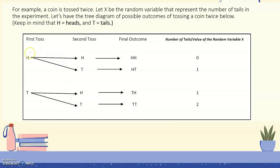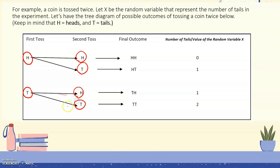For the first toss, we can have two possible outcomes: it can be heads and it can also be tails. Now for the second toss, it can also be heads and it can also be tails. So the possible outcomes in tossing a coin twice can be heads and heads, heads and tails, tails and heads, or tails and tails.